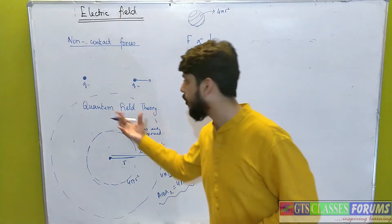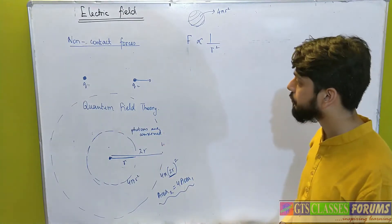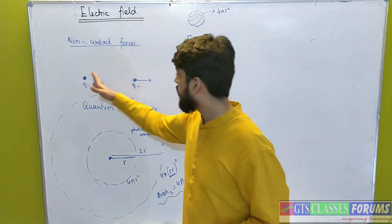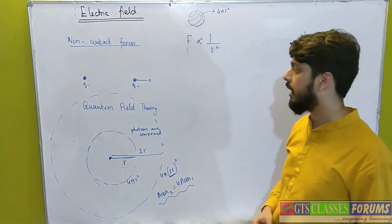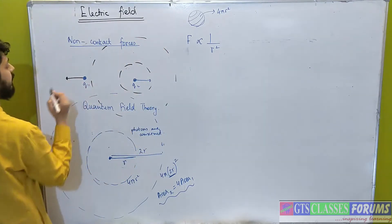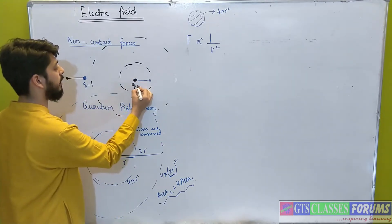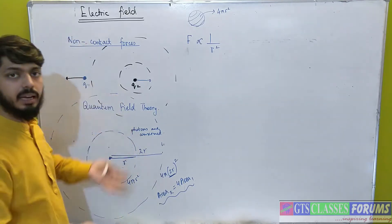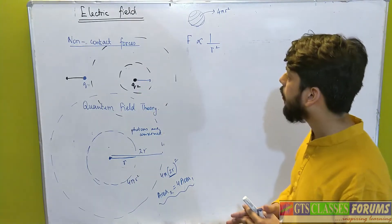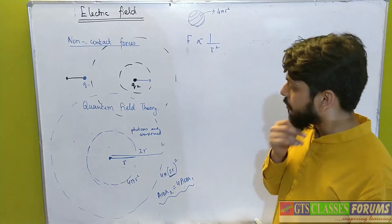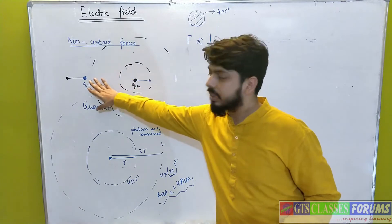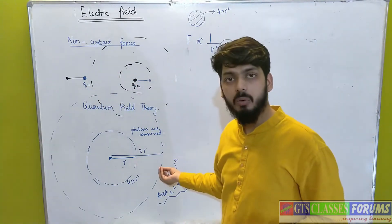That is why quantum field theory is a very very important theory. The photons that interact with a charge exert force on it, and that is why force decreases as one over r². Similarly, this charge sets up its own field, and because of that field, force is exerted at a point. If the charge is the same, the force will be more. Now, we will talk about the unit charge.